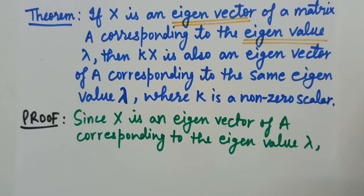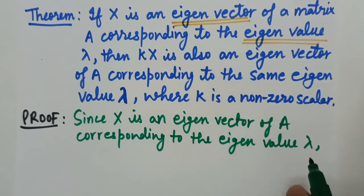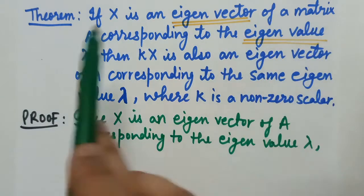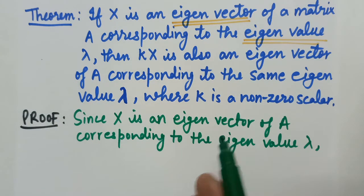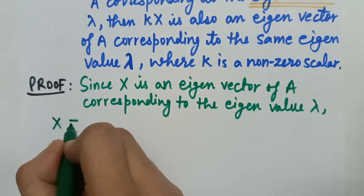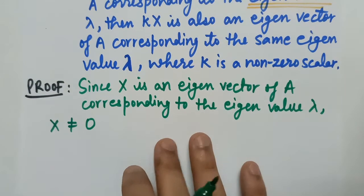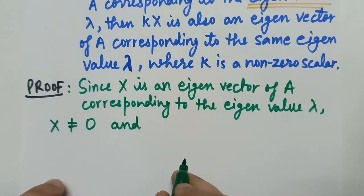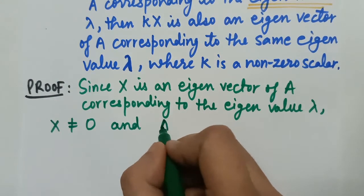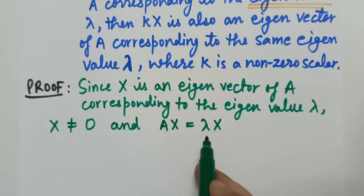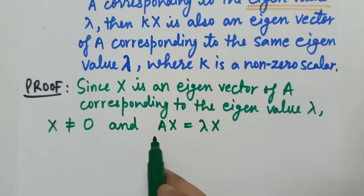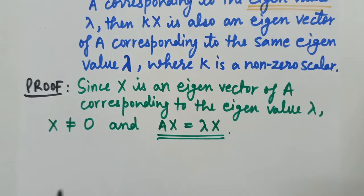Since X is an eigenvector of A corresponding to the eigenvalue lambda — this is given. Because X is an eigenvector, according to the definition we have studied, X is a non-zero matrix and it satisfies the equation A into X equals lambda into X. So this is true for X and lambda.